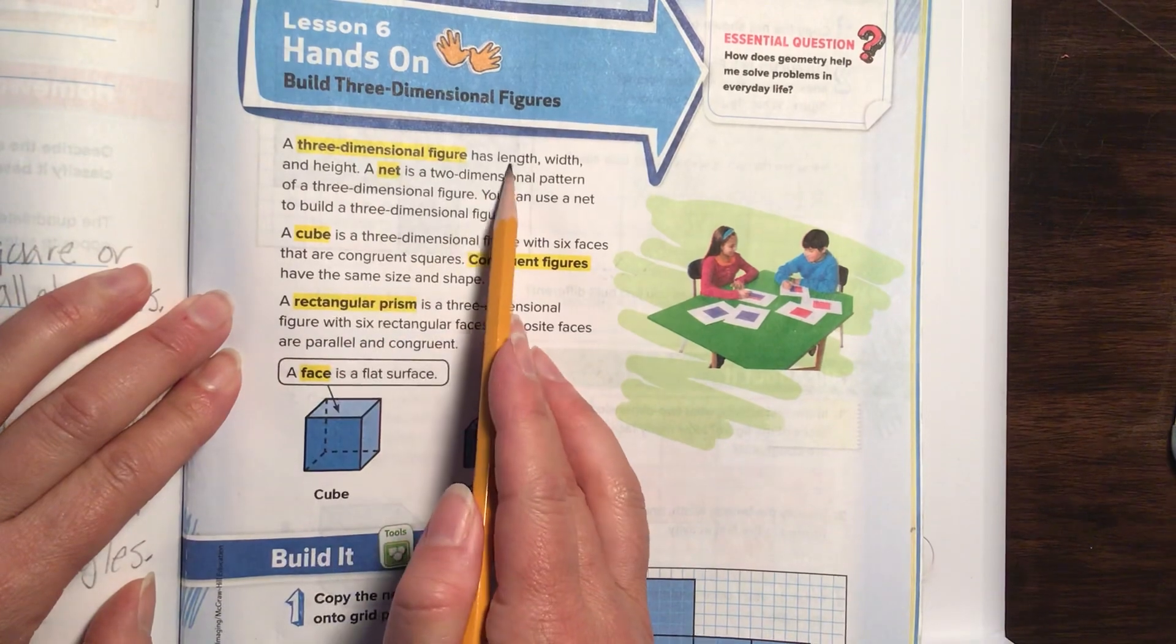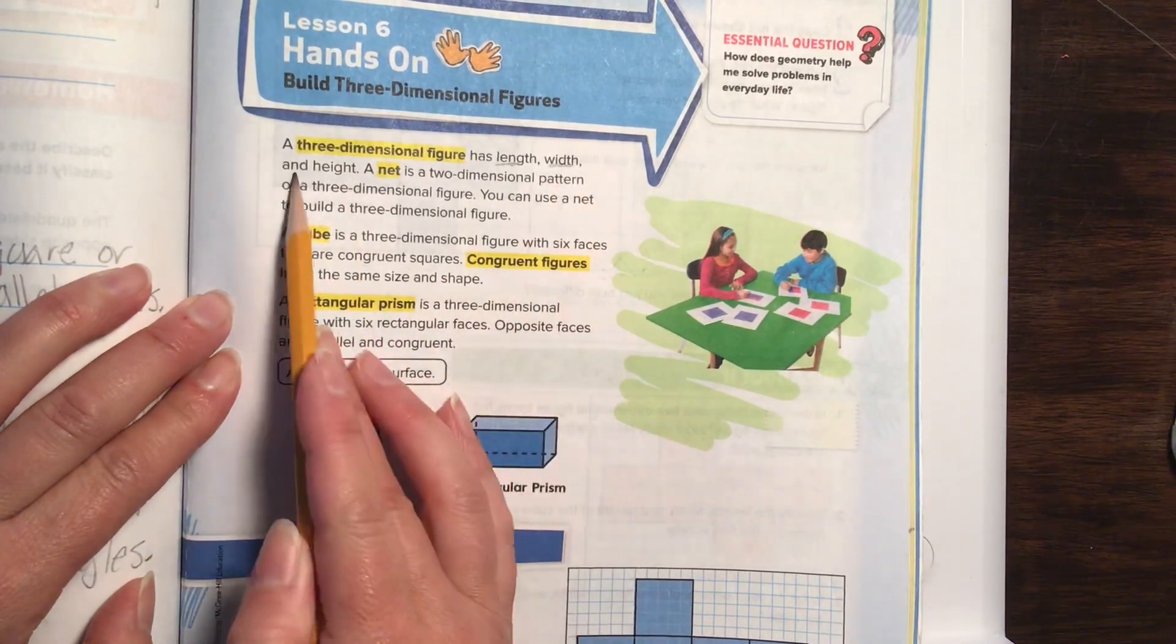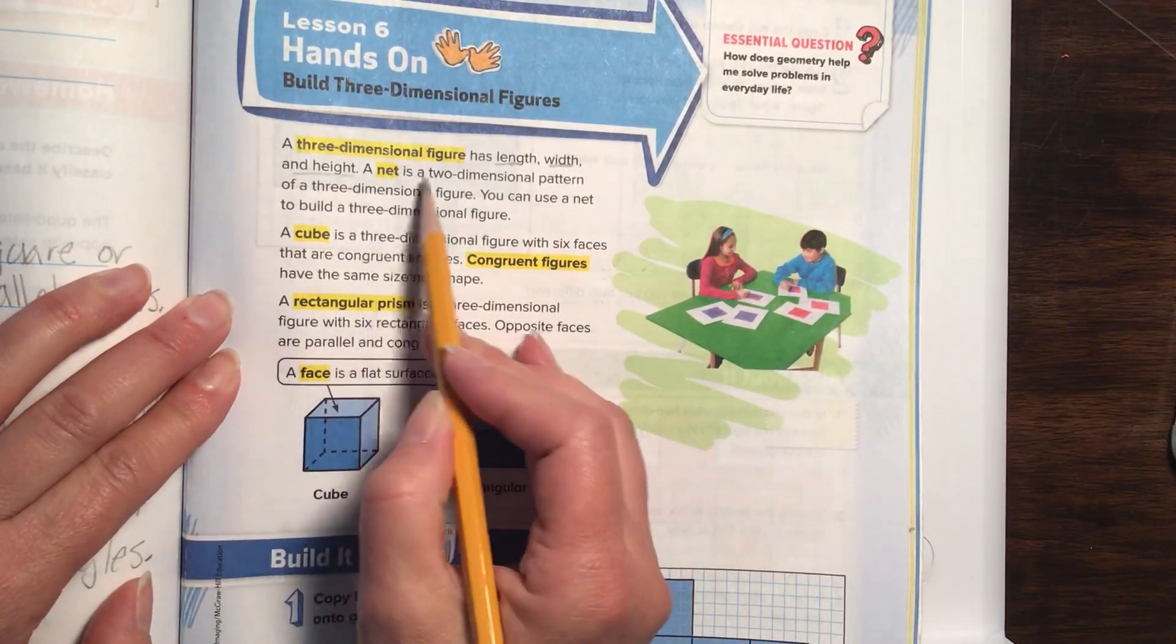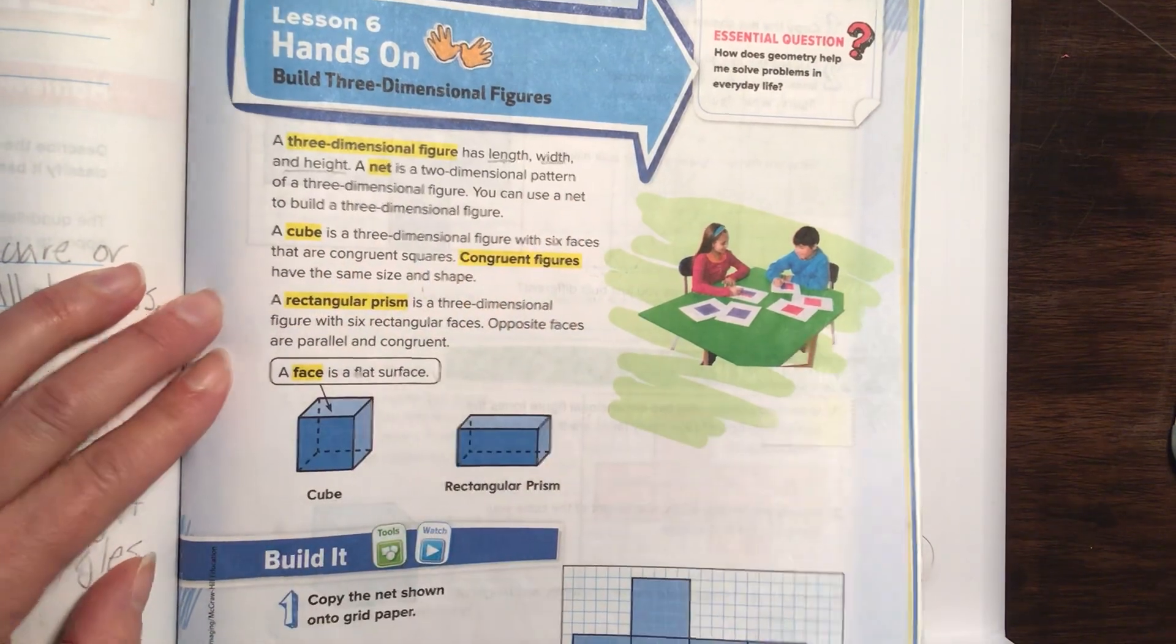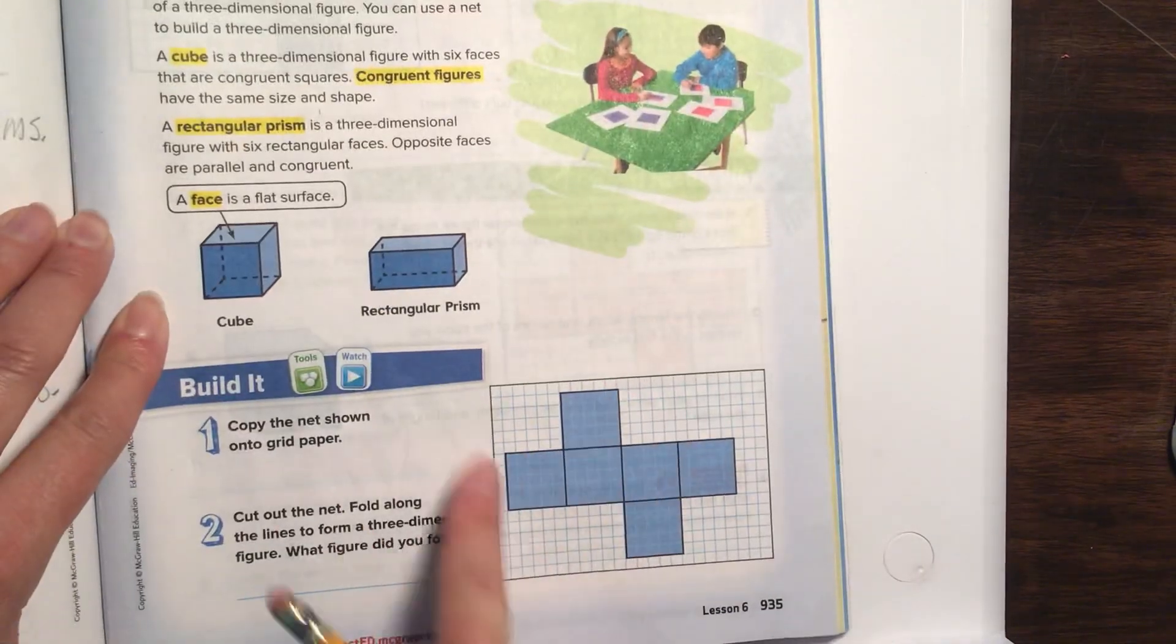A three-dimensional figure has length, width, and height. A net is a two-dimensional pattern of a three-dimensional figure. Or, a fancy way of saying, this is a net.